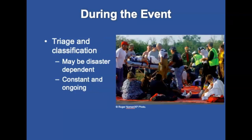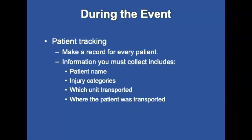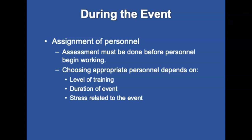Triage classification may be disaster dependent and is constant and ongoing depending on the patient's need and the availability, safety, and sustainability of EMS providers. Patient tracking is essential — you must make a record for every patient you see or assist during the event and complete a patient care report for transported patients. The transport supervisor must maintain a log of patients and the hospitals they were transported to. Information given to the incident commander includes patient names, injury categories, which units transported, and where patients were taken. Choose appropriate personnel based on level of training, duration, and amount of stress related to the event.